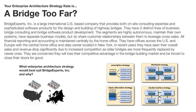All financial reporting and accounting is maintained centrally by the home office. They have offices across the U.S. and Europe with the central home office and data center located in New York. In recent years, they've seen their overall sales and revenue drop significantly due to increased competition as older bridges are more frequently replaced by newer ones. Because of this increased competition, they're concerned that they will lose their competitive advantage in the bridge building market and be forced to close their doors for good. So here we have a highly diverse company that's struggling financially. What enterprise architecture strategy would best suit Bridge Experts Inc., and why? I'd encourage you to hit pause, look at lessons 63 through 66, and then make your decision.